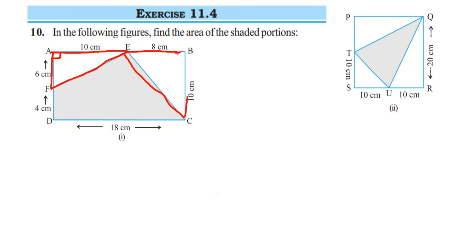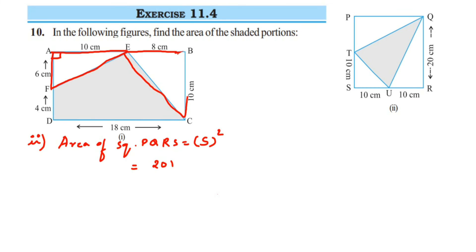For the second question, we first find the area of square PQRS. Area of a square equals side squared. The side is 20, so 20 squared equals 400 centimeter square.